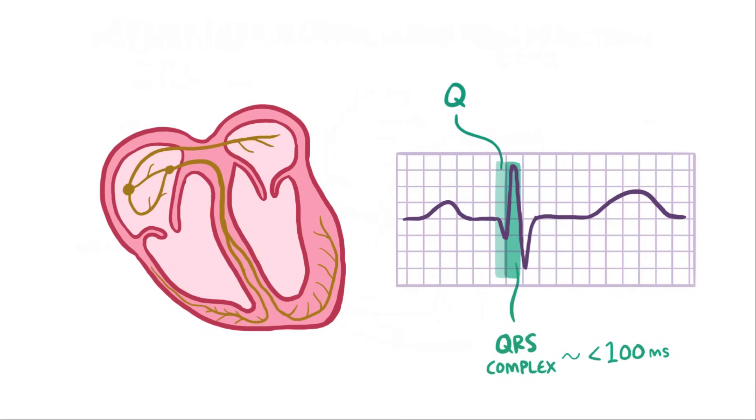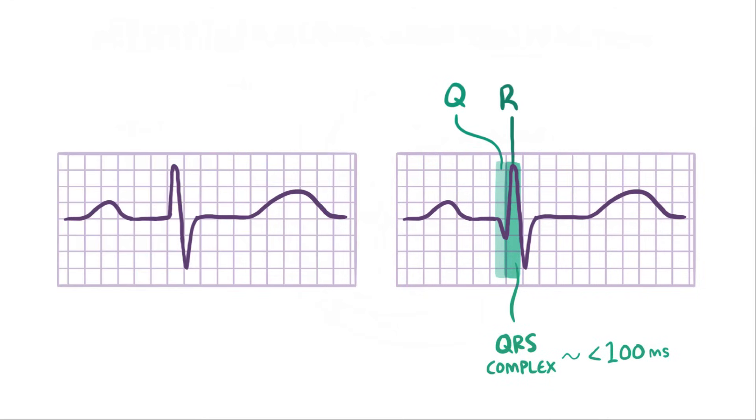If the next deflection is upward, or positive, then it's called an R-wave. If though the first wave after the P-wave is upwards instead, or positive, you basically skip the Q and just call it an R-wave. Finally, any downward deflection after the R-wave is called the S-wave.